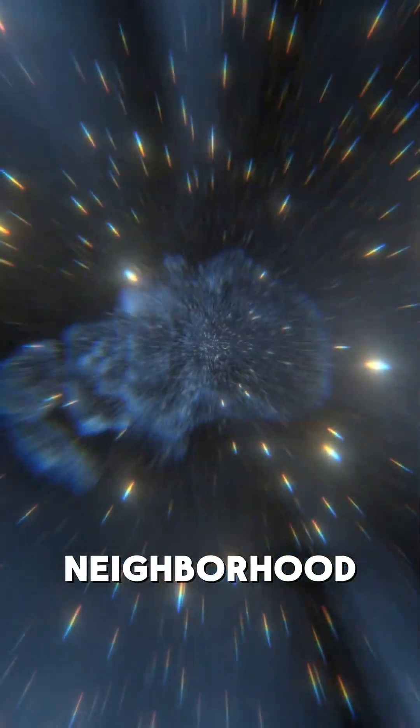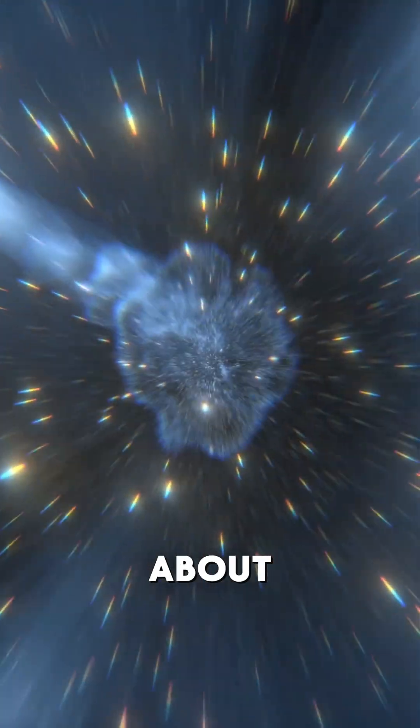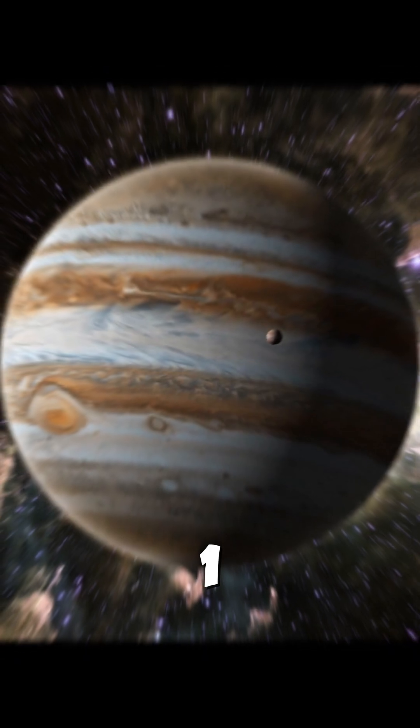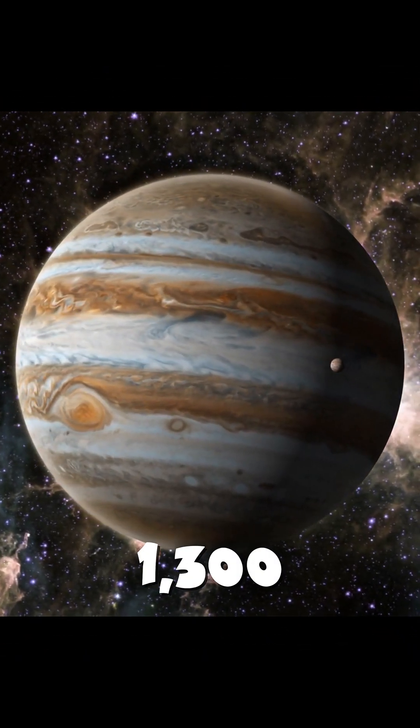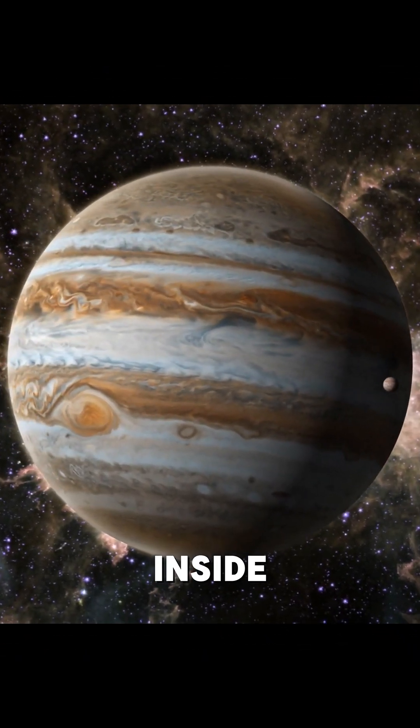Welcome to the Cosmic Neighborhood. Here are 5 mind-blowing facts about our solar system. Number 1. Jupiter could fit all planets inside it, over 1,300 Earths could fit inside Jupiter.